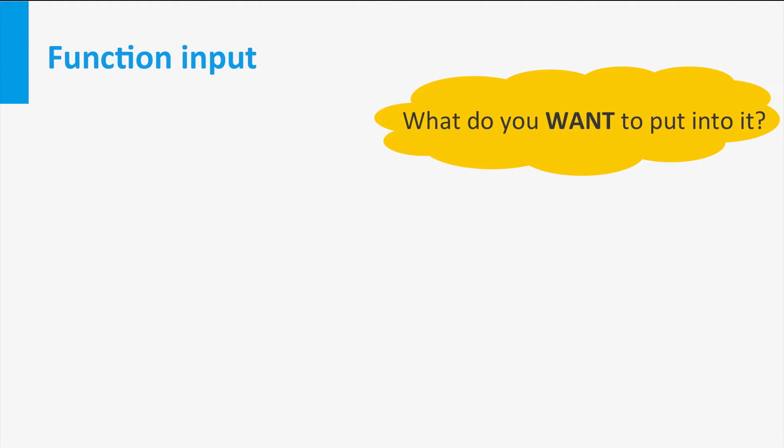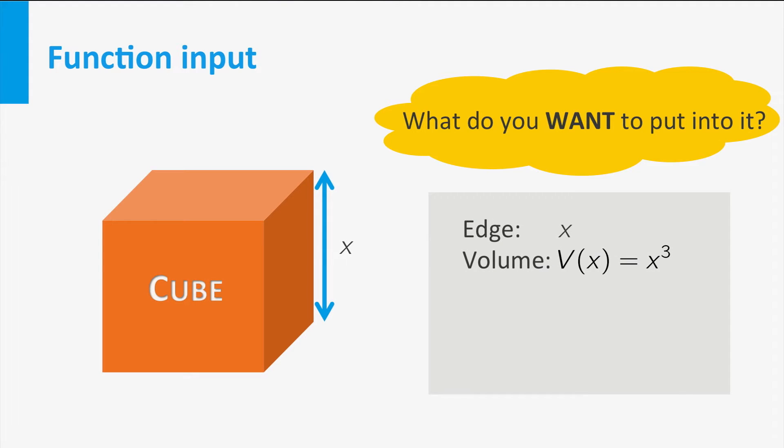As for the second question, consider the following example. If a cube has edges of side x, its volume is equal to x cubed. This is the volume function of the cube. In principle, this function is defined for all values of x, but given the context, it makes no sense to put in negative numbers. So in this case it is natural to restrict the input values to numbers larger than or equal to zero.